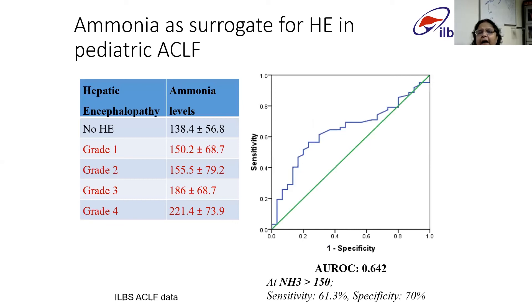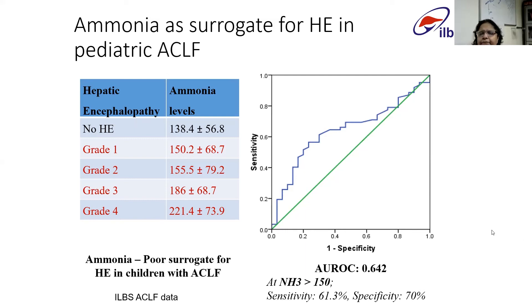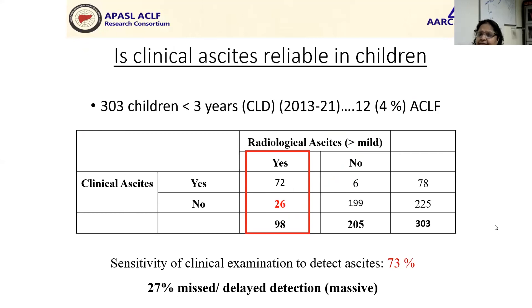When we tried to look at our own data to see if ammonia can be a surrogate marker for H-E, we found the AUROC to be very low at 0.64, with very low sensitivity and specificity of just about 70%. So we don't think ammonia is a very good surrogate marker for H-E. When we looked at clinical ascites versus radiological ascites, we found that almost 27% of our cases had radiological ascites that we were missing clinically. Hence, if we also add radiological ascites in these cases, we may pick up more cases of ACLF.